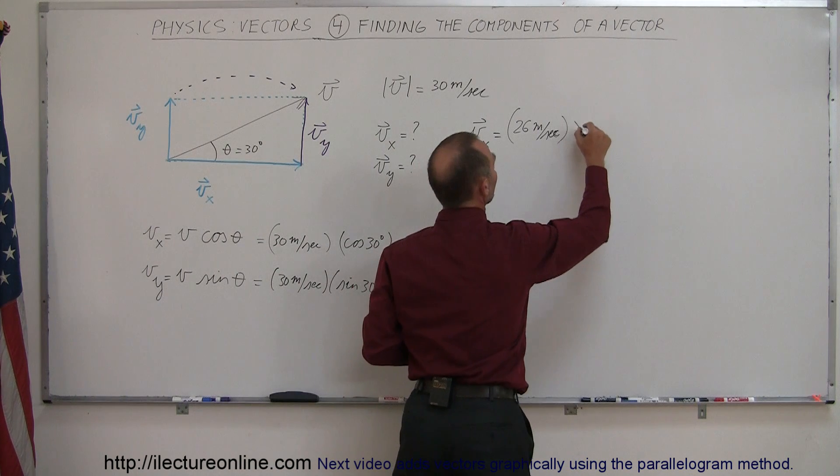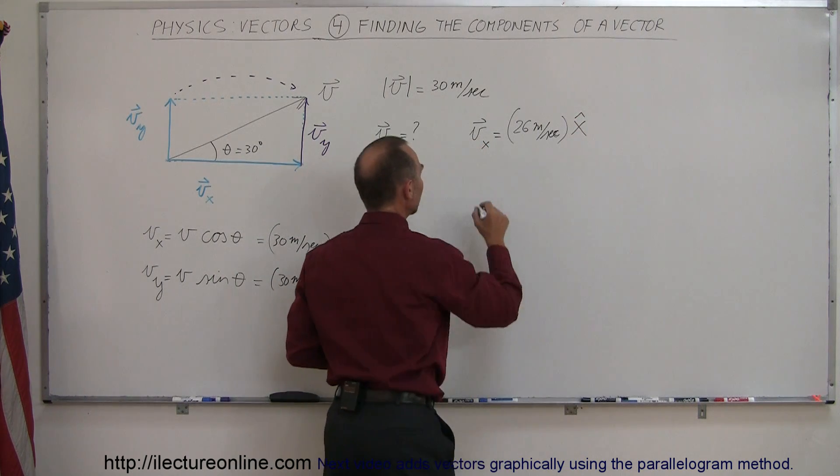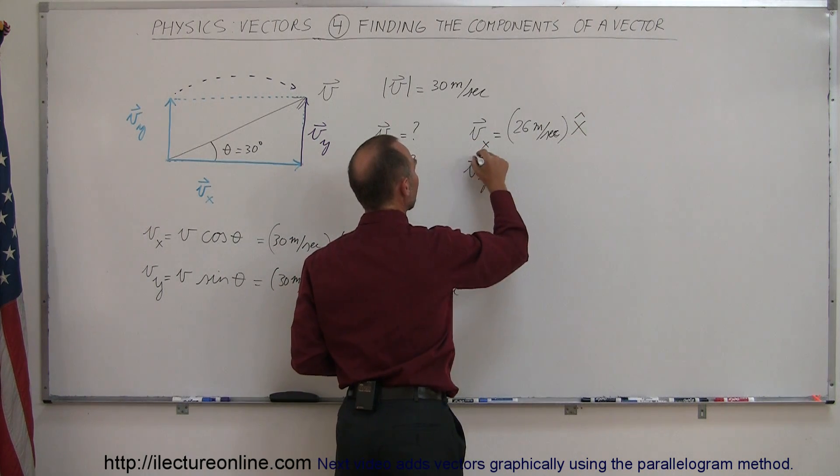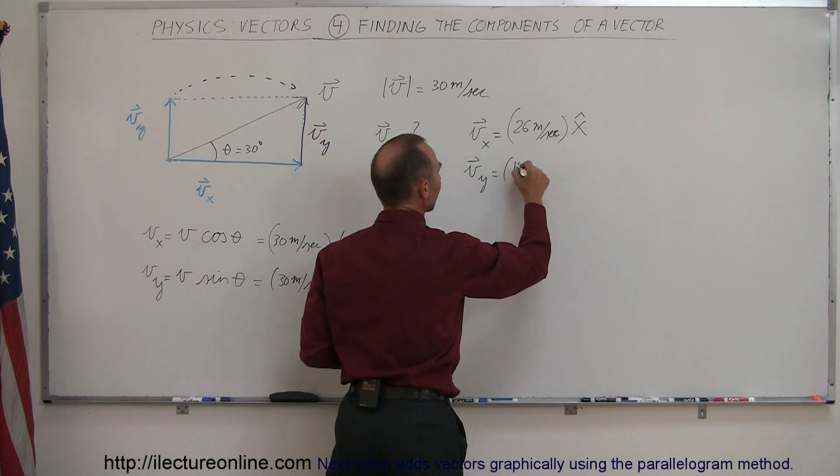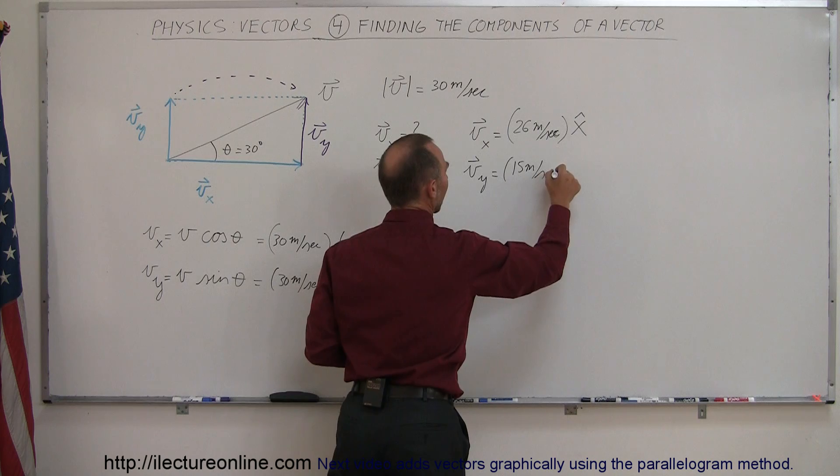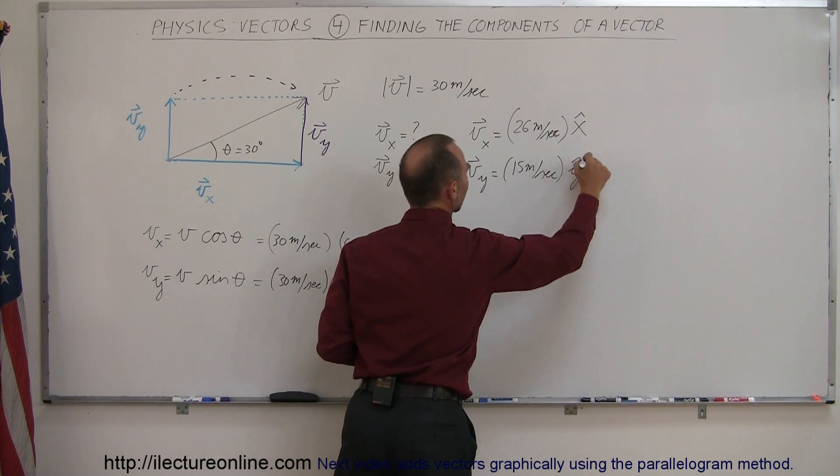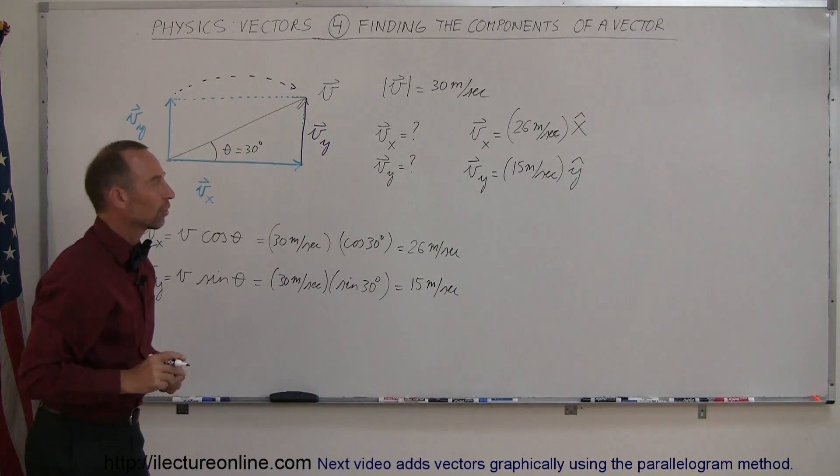And since it's pointing in the positive x direction, I'll write that as the unit vector in the x direction. v sub y is equal to, in this case, it would be 15 meters per second. And since it's pointing in the y direction, I'll draw the unit vector y.